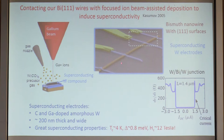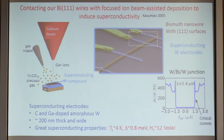Once we've selected these 111 wires, knowing they have 111 facets, we connect them to superconducting electrodes using a focused ion beam of gallium ions. This focused ion beam can decompose a gas and generate a disordered tungsten alloy with very interesting superconducting properties: a Tc of 4 Kelvin, a corresponding gap, and a critical field of 12 Tesla. When you cool down such an S-bismuth nanowire-S junction, you see a zero-resistance state up to a critical current, meaning you're inducing superconductivity through the bismuth wire — a supercurrent going from one electrode to the other through the bismuth nanowire.